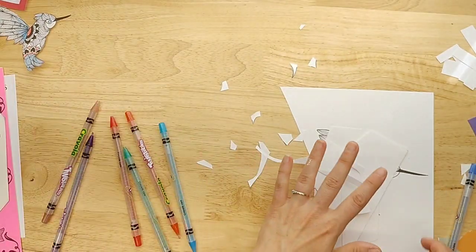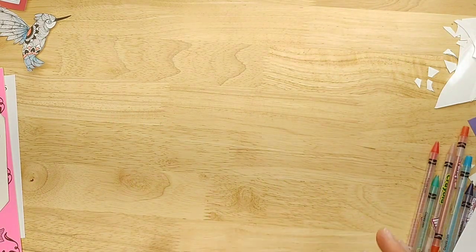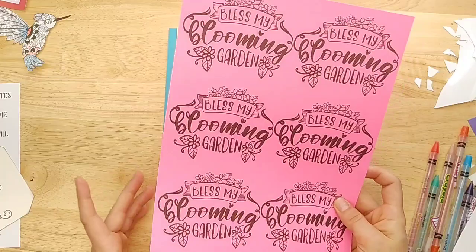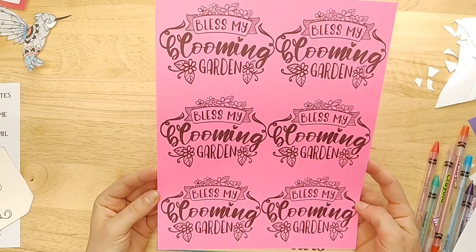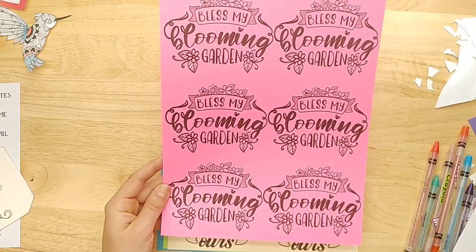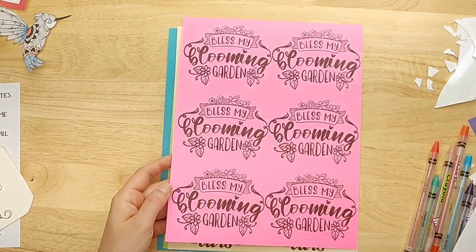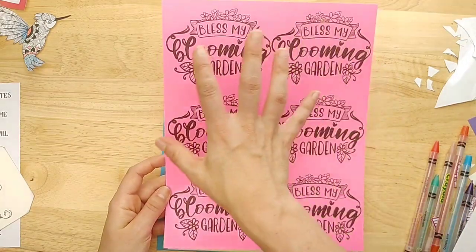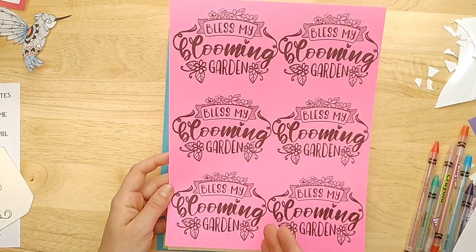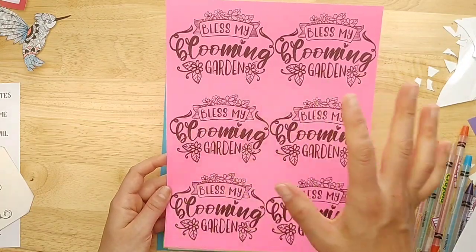And then last but not least, the quotes. So many different quotes. Now I can tell these are probably mostly meant for the SVG files. So cutting out of vinyl, different things like that. Making t-shirts and mugs and things like that. But I'm focusing on a journal. How could we use these in journals? They also have the PNG files or the transparent files. You can just easily print. I printed this onto pink cardstock. Bless my blooming garden. And I can just cut them into journal cards and stick them into my floral or garden journals. I can print them onto any color.